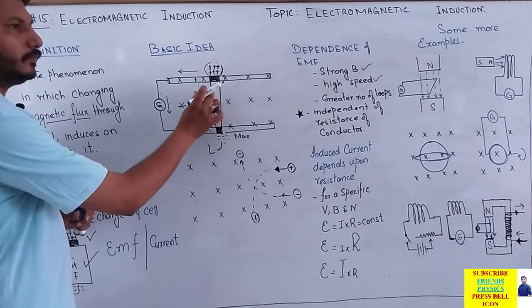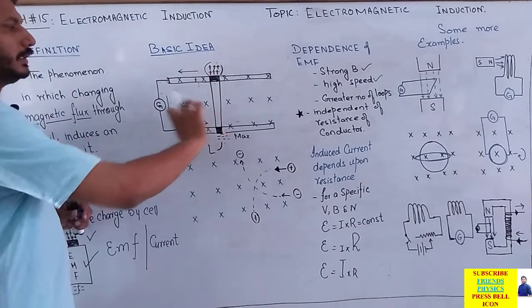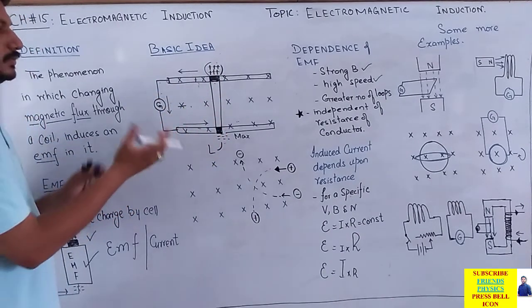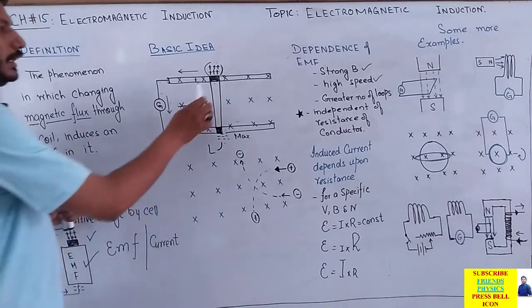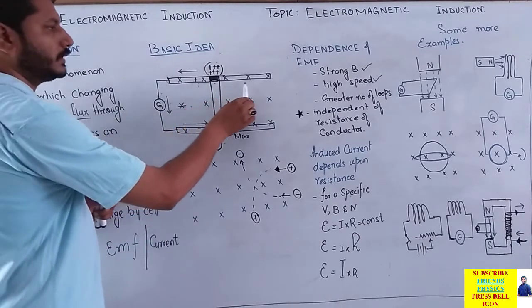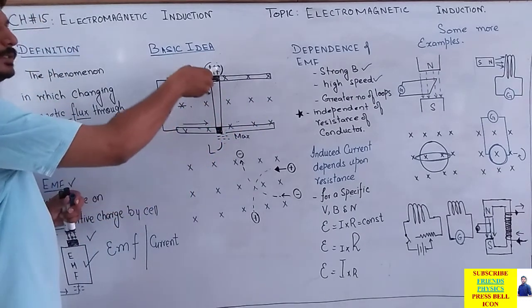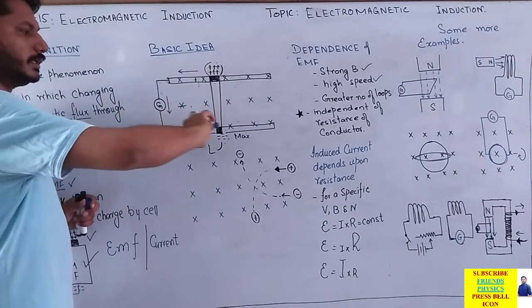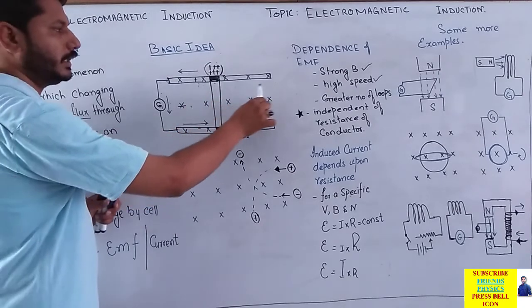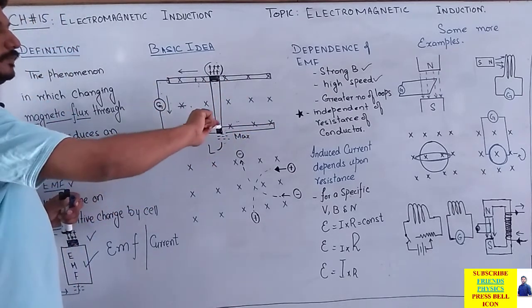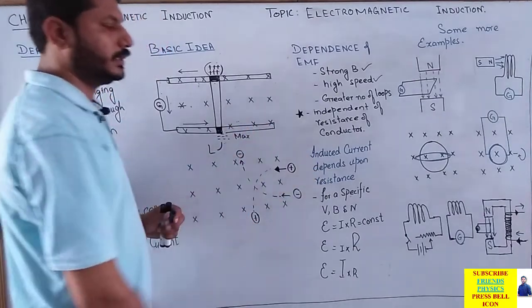اگر ہم نے conductor کو move کرنا روک دیا تو charges ایک دوسرے کو neutralize کریں گے اور current تھوڑی دیر بعد zero ہو جائے گی۔ اگر آپ conductor کو move کرتے چلے جائیں تو positive charges پر upward force لگتی رہے گی اور negative charges پر downward force۔ The conductor will keep on moving, the current will keep on flowing۔ اس current کو induced current کا نام دیں گے۔